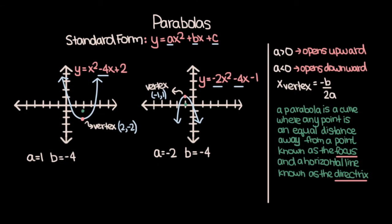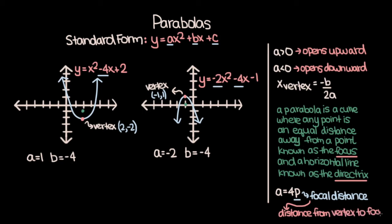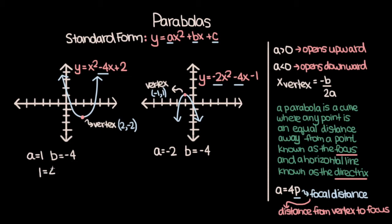To find the exact coordinates of the focus, we use the formula a equals 4p, where p is the focal distance — the distance from the vertex to the focus. For the example on the left, a is equal to 1, so 1 equals 4p. Dividing both sides by 4, p equals one fourth. This means the focus is one fourth above the vertex. The vertex has coordinates (2, negative 2), so the focus has coordinates (2, negative 2 plus one fourth), which is (2, negative seven fourths).